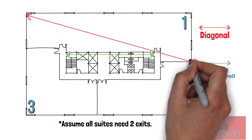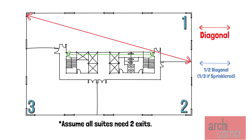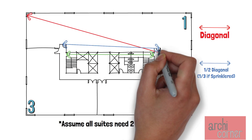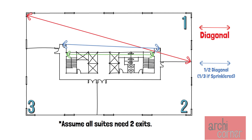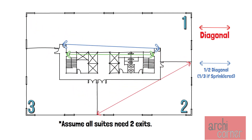Suite 1's longest diagonal would be this distance, and therefore these two exits must be at least half the diagonal dimension — or a third if sprinklered. Suite 2's longest diagonal would be this distance, and likewise these two exits must be at least half the diagonal dimension — or a third if sprinklered.